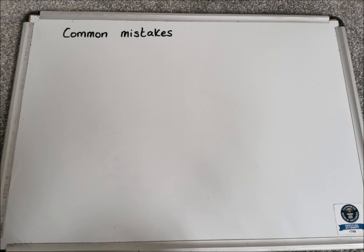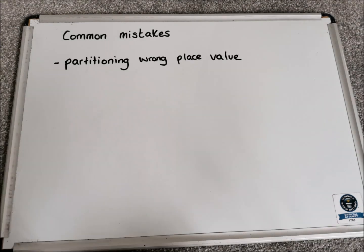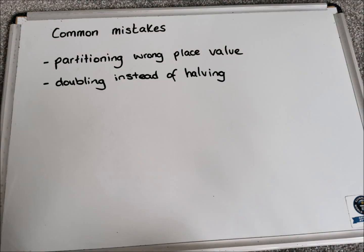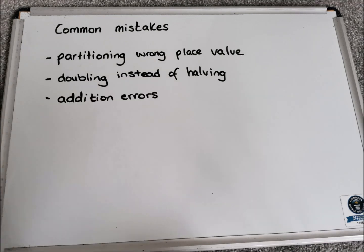Common mistakes that can come up during partitioning for doubling and halving: first, partitioning the wrong place value — especially with decimal numbers, so take your time and think about place value. Another common mistake is doubling instead of halving, particularly if your brain is used to doubling and then suddenly switches to halving. Also watch for addition errors when adding sections together — if you need to do a side sum for addition, that's absolutely fine.